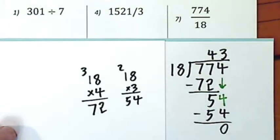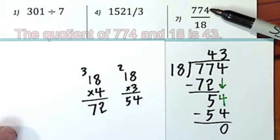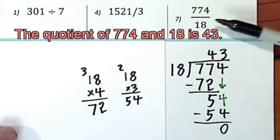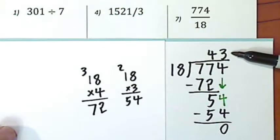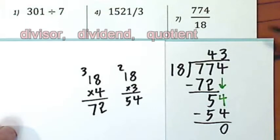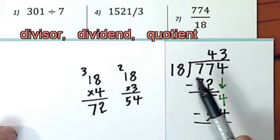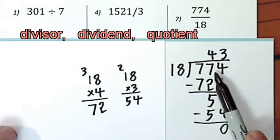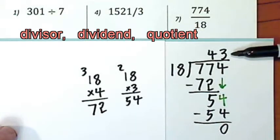And there you have it. The quotient of seven hundred seventy-four and eighteen is forty-three. And one more time. The divisor, the dividend, the quotient.